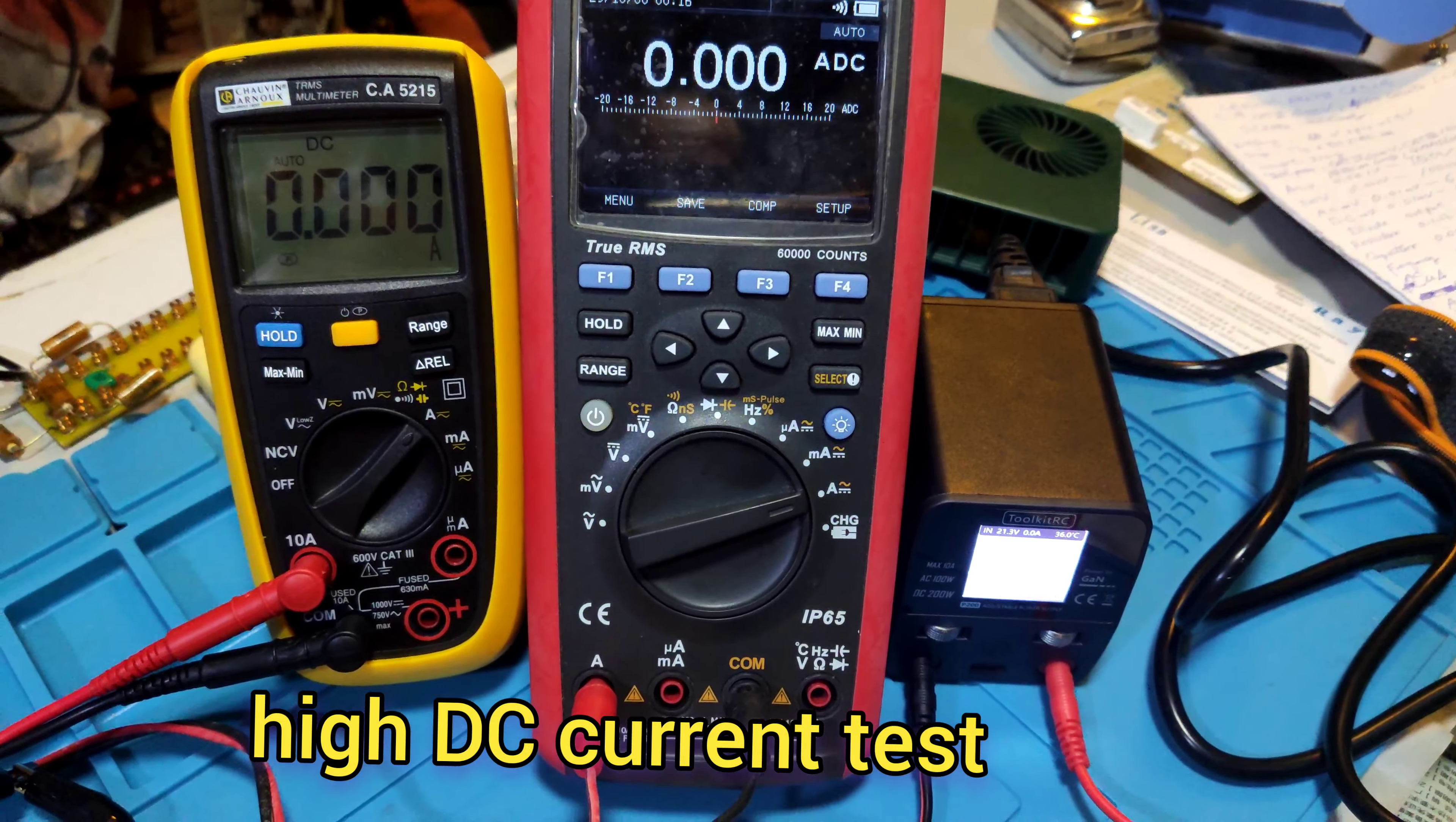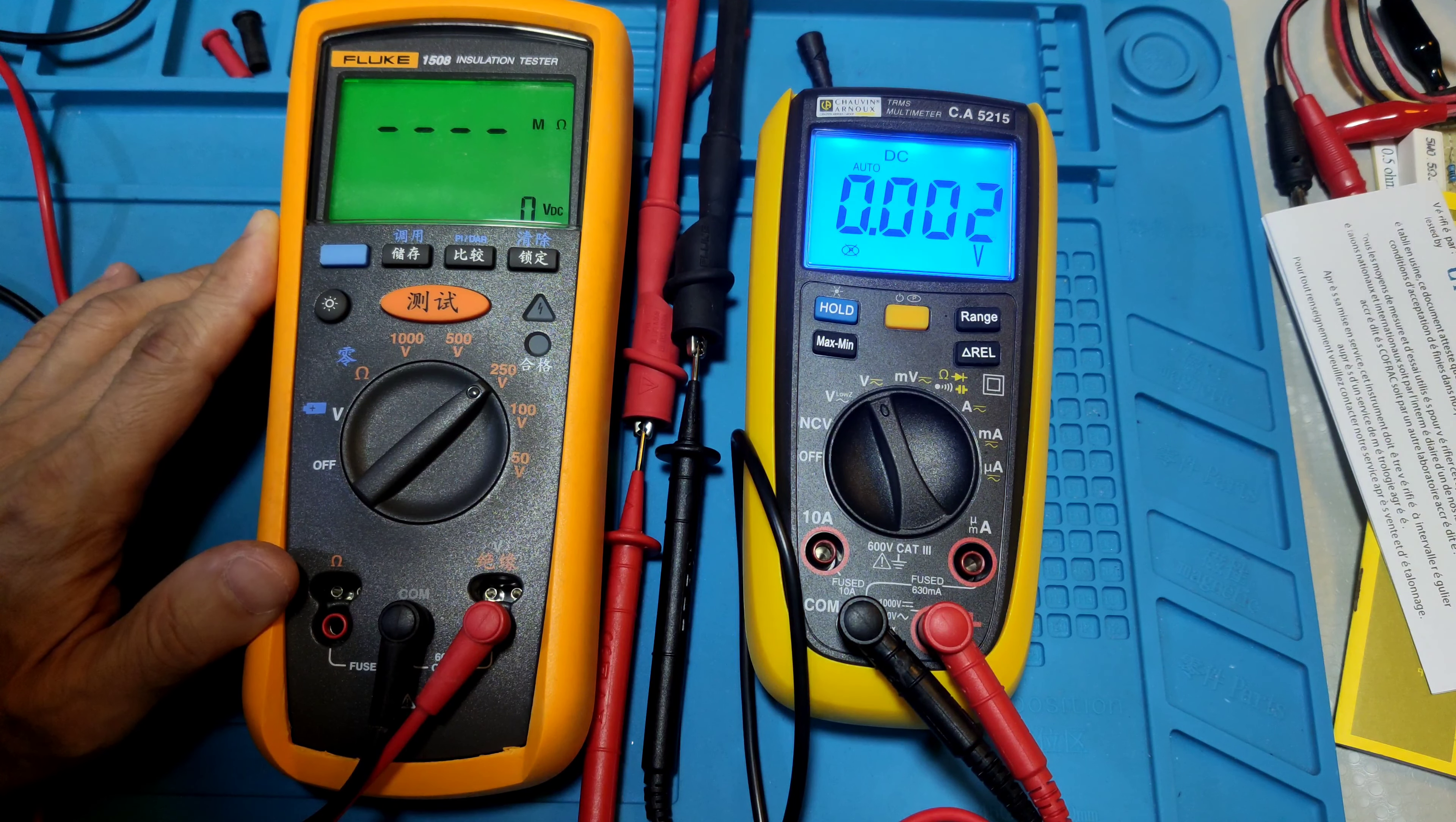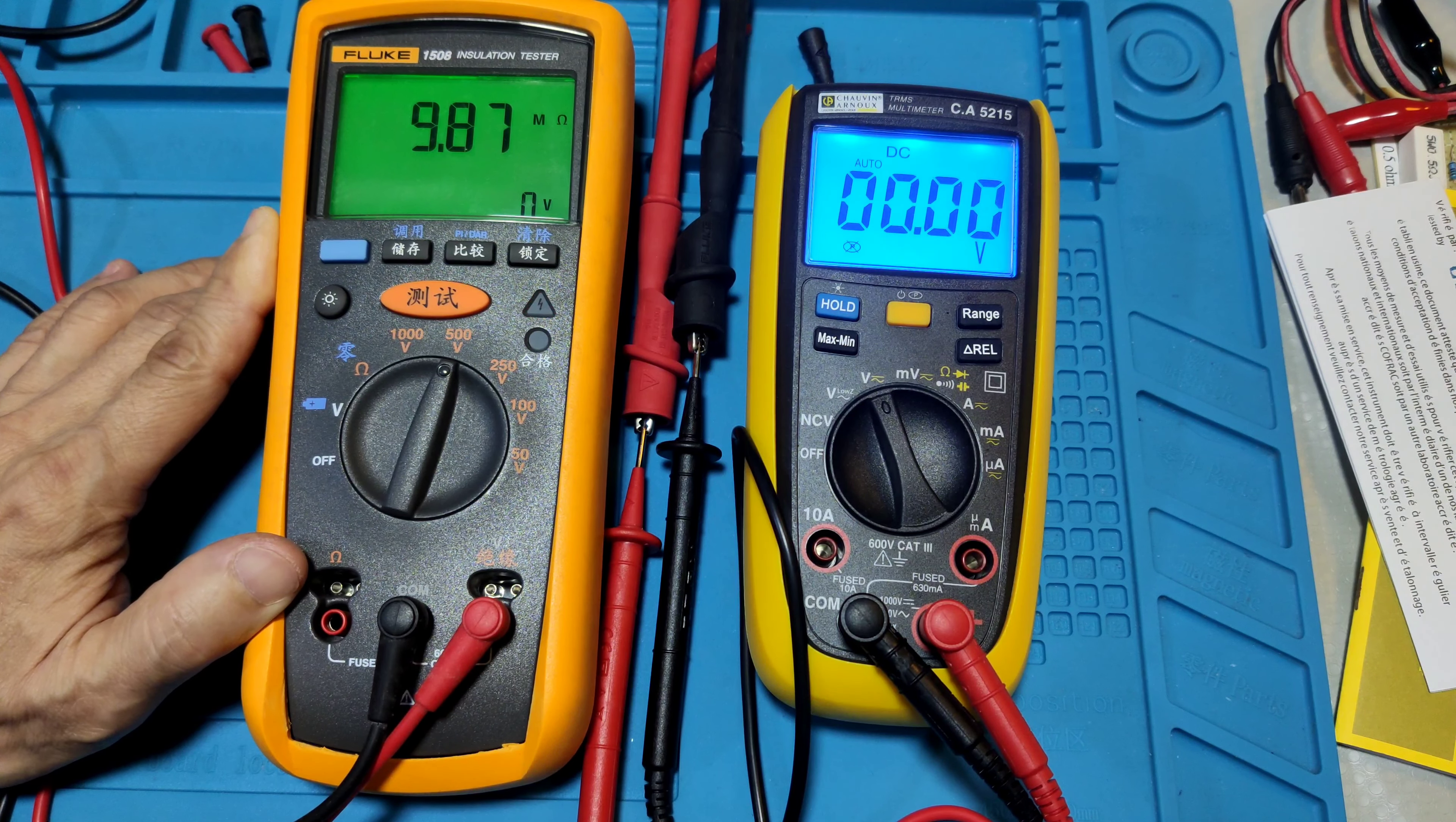Next test high DC current test. One, two, three - it's near the reading. High DC voltage test - 100 volts shows 109.4 volts DC. 250 volts shows 275.9 volts. Higher - 500 volts shows 526.5 volts.